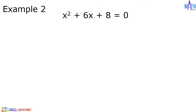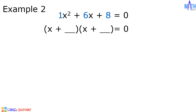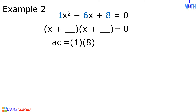Example number 2: x squared plus 6x plus 8 is equal to zero. In this quadratic equation, a is equal to 1, b is equal to 6, and c is equal to 8. Since the value of a is equal to 1, the factors are two binomials of the form x plus blank times x plus blank is equal to zero. Let us multiply the values of a and c: 1 times 8 is equal to 8.